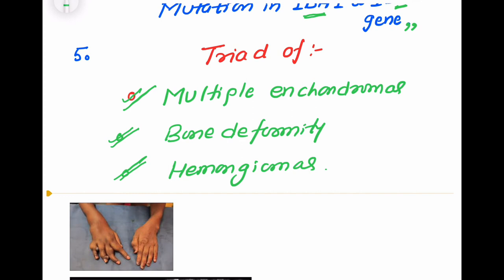Most commonly it is a triad of multiple enchondromas, bone deformity, and hemangiomas. As we can see in this diagram, these are the multiple bone deformities which are characteristically seen in the x-ray image of the hand.